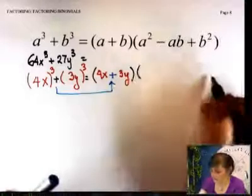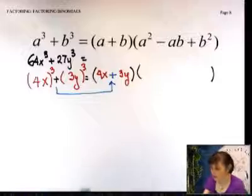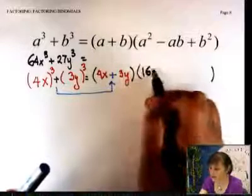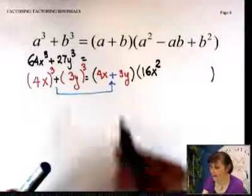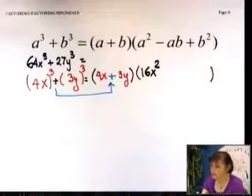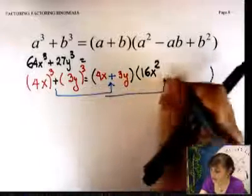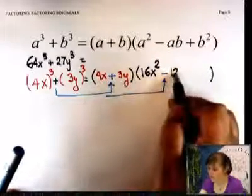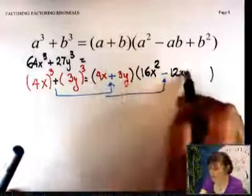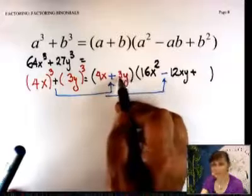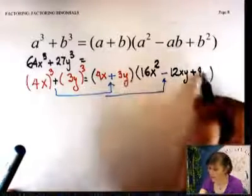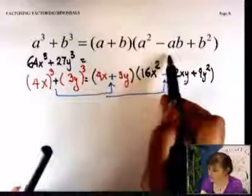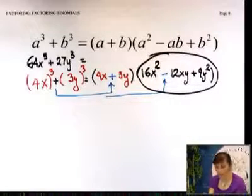Now for the trinomial factor: square the first — (4x) squared gives 16x squared. The second sign is opposite to plus, so it's minus. Then multiply first times last: 4 times 3 is 12, and x times y gives xy — so minus 12xy. Plus the last squared: 3 squared is 9, so plus 9y squared. This portion is prime and doesn't factor further, so you stop right here.